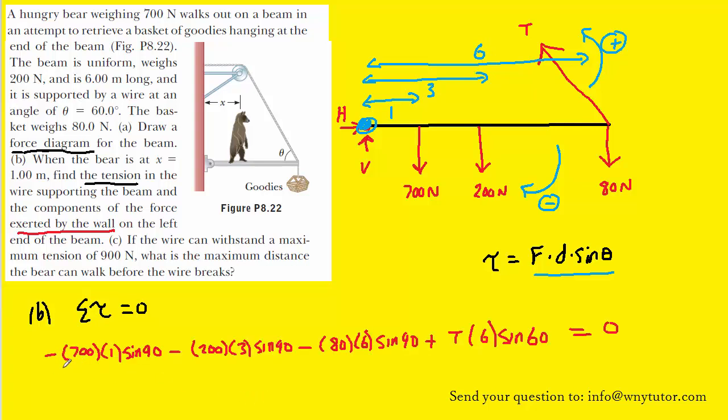So here it is. Just notice that each term in the equation is an F times a D times a sine of theta, and I want to point out that most of the thetas are 90 degrees. You can see them right there. The reason is that those forces that are acting downward are acting perpendicular to the beam, and so their angles are 90 degrees.